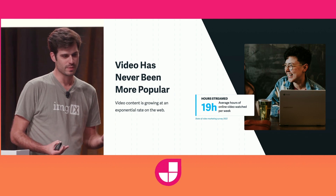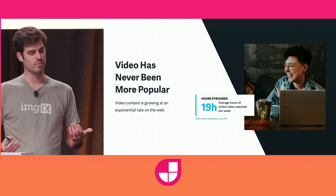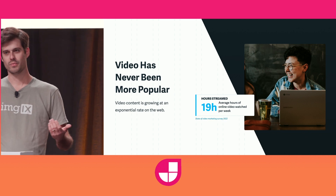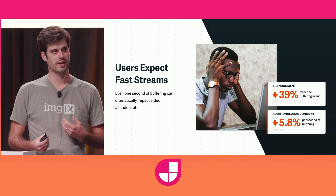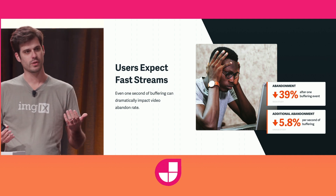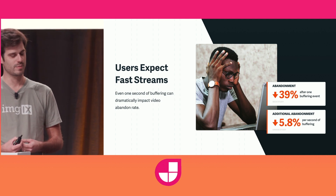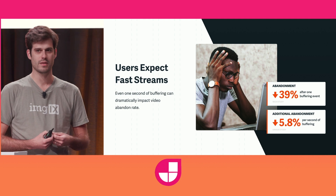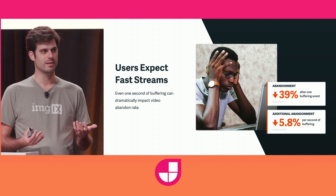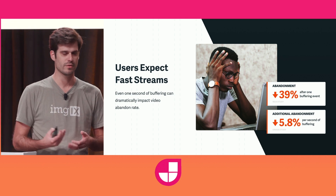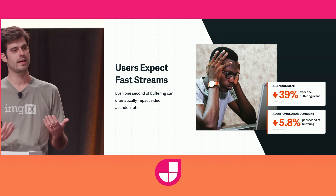Let's talk about video on the web. It's been growing like crazy. Average users are watching about 19 hours of streamable video a week, and videos have never been so popular. But that comes with some heightened expectations. Things like YouTube and Netflix have totally altered the way that users expect videos to feel on the web. Studies show, like one from Mux, that even just one buffering event can lead to 39% abandonment on videos, and every additional buffering event is another almost 6% abandonment.